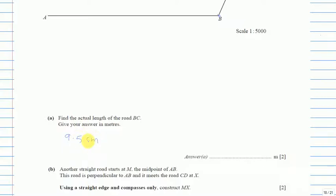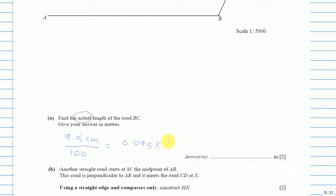So we have 9.5 centimeters. To convert from centimeters to meters, we divide by 100, giving 0.095 meters. This is the paper measurement. To get the actual real-world length, we multiply by 5000, because the actual road is 5000 times larger. So 0.095 times 5000 gives us 475 meters.